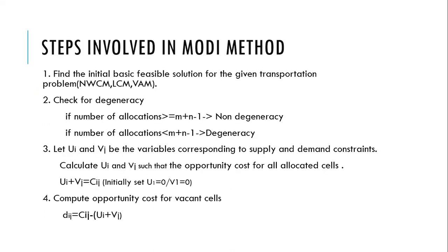So now we will see what are the various steps involved in this modified distribution method. The first step, as usual, we have given any transportation problem we have to find the initial basic feasible solution by using any of these three approaches. And the next step, which is also the same step present in the stepping stone method, is checking for degeneracy. So here if the number of allocations is greater than or equal to m plus n minus one then there is no degeneracy.